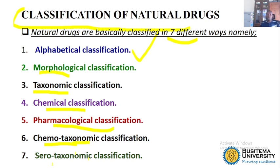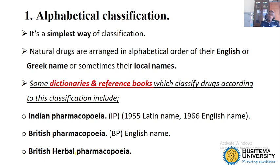The seven ways are: one, alphabetical classification; two, morphological classification; three, taxonomic; four, chemical; five, pharmacological; six, chemo-taxonomic; and seven, serotaxonomic.